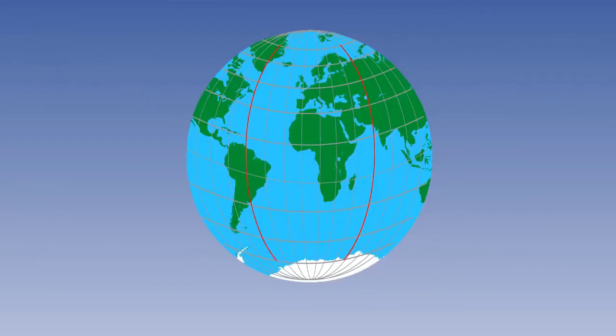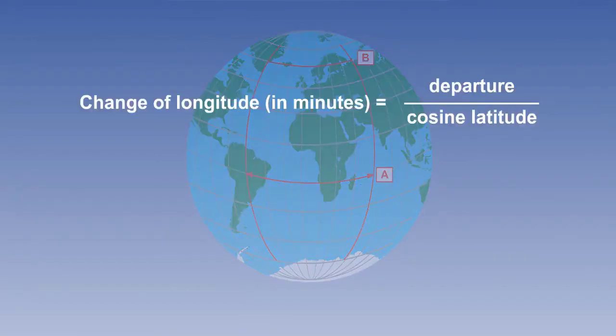Longitude is slightly more complicated, because one minute of change of longitude is one nautical mile only at the equator. You can see that the distance on the Earth at latitude B, between the same change of longitude, is less than it is at latitude A, the equator. This east-west distance on the Earth is called departure, and is measured in nautical miles east or west. The equation linking departure and change of longitude is that change of longitude in minutes equals departure over the cosine of latitude.